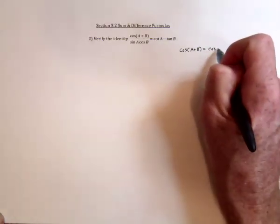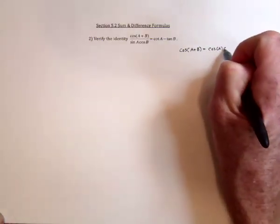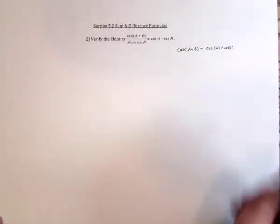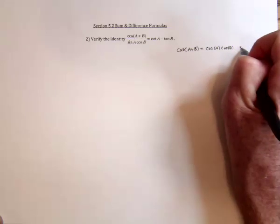Cosine takes cosine of each angle first of all. And then it takes sine of each angle.